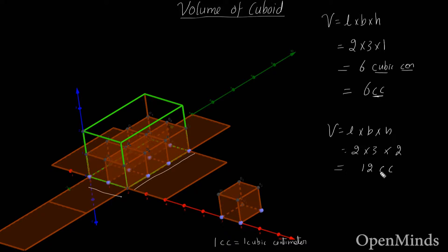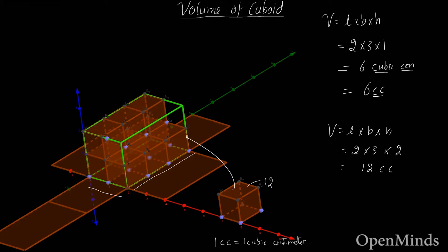That's twelve cubic centimeters, or twelve cc. It means we can place twelve of these unit cubes inside this box. We already have six cubes from before, so we place another six — the seventh, eighth, ninth, tenth, eleventh, and twelfth. All cubes have dimensions one by one by one centimeter.